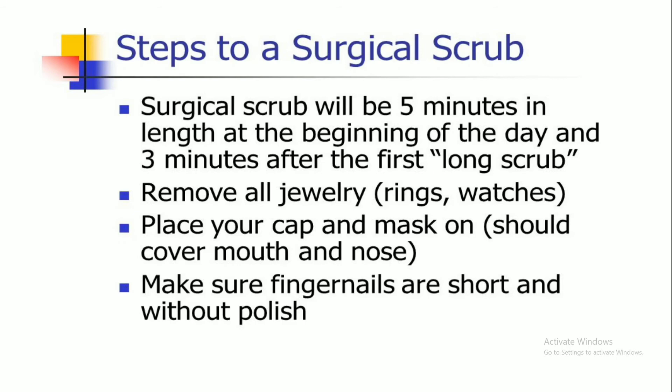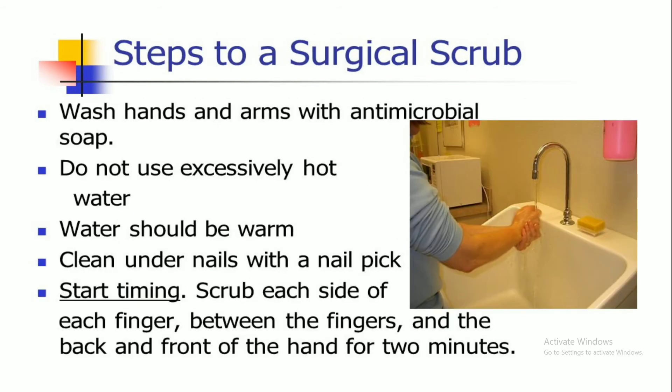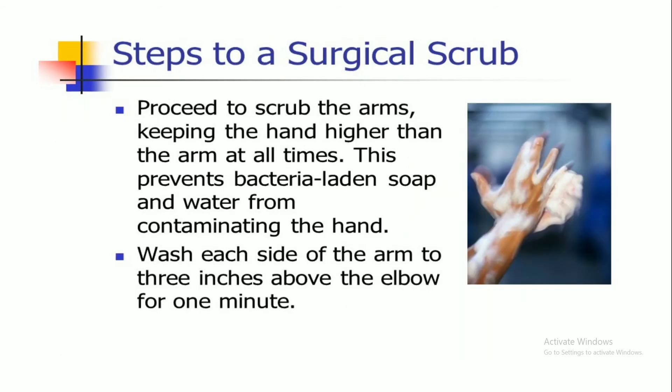Steps of surgical scrub: wash hands and arms with an antimicrobial soap but do not use excessively hot water. Start timing and scrub each side of the finger, between the fingers, and the back and front of the hand. You should know about the hand-passing technique. Proceed the scrub to the arms, keeping the hand higher than the arm to prevent bacterial-laden soap and water from contaminating the hand. Wash the side of the hand and elbow.